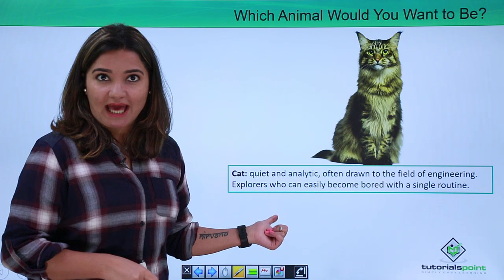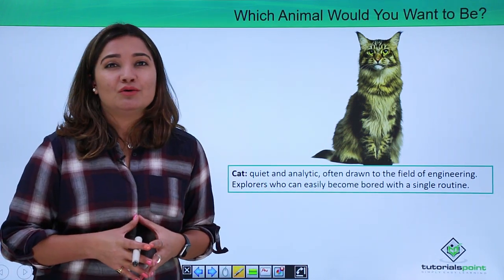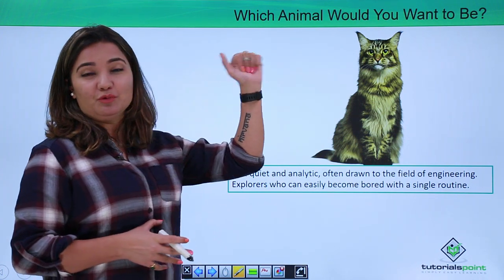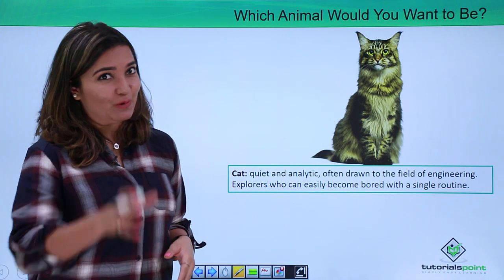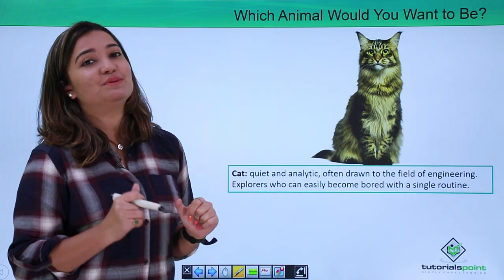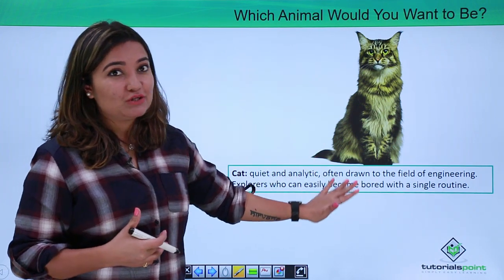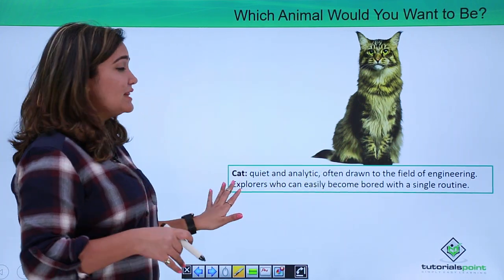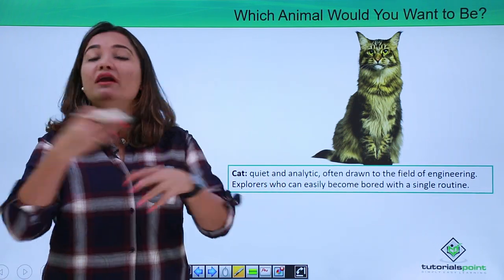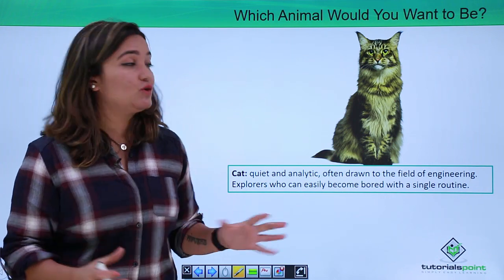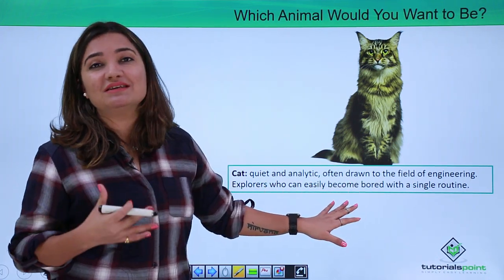How about a cat? There are many cat lovers and I'm sure when asked which animal would you want to be, many people would choose a cat. What does a cat personality indicate? They are quiet, analytical, often drawn towards the field of engineering. They are explorers. They love adventure, they love to experiment, they love to explore.